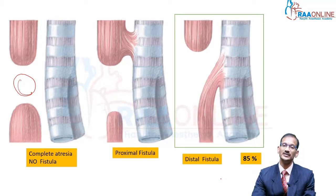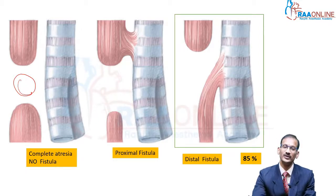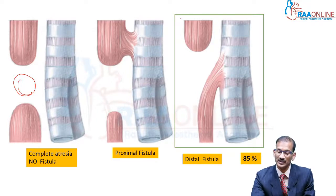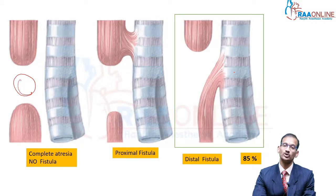The third type is the most common variety of tracheoesophageal fistula, seen in 85% of patients. Here again, you have a complete esophageal atresia — the top end of the esophagus is completely fused — however, the distal part of the esophagus communicates with the trachea, as seen in this diagram. This is the most commonly encountered variety.